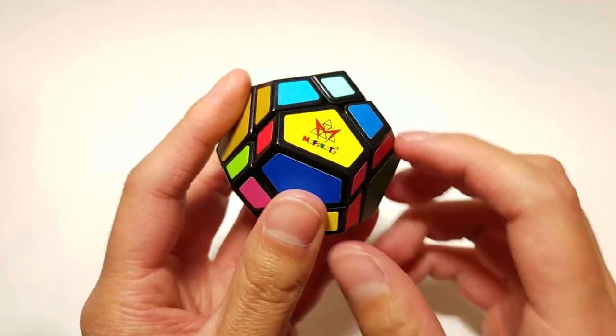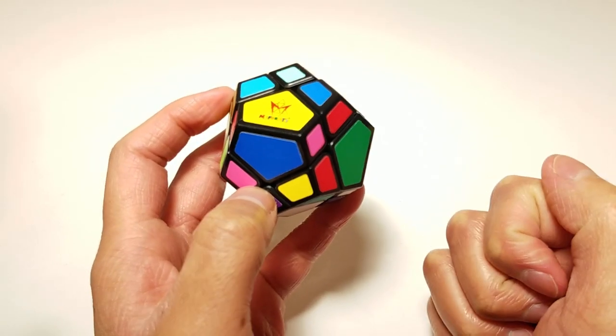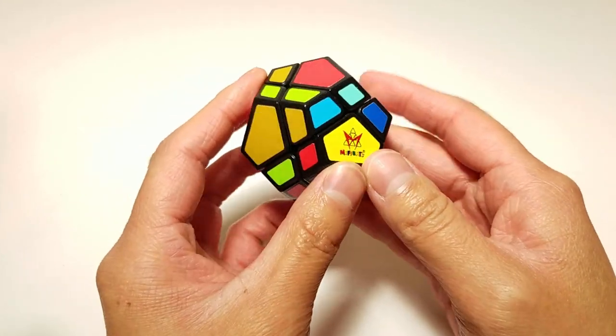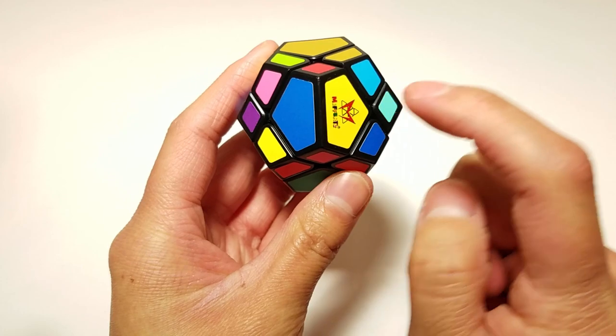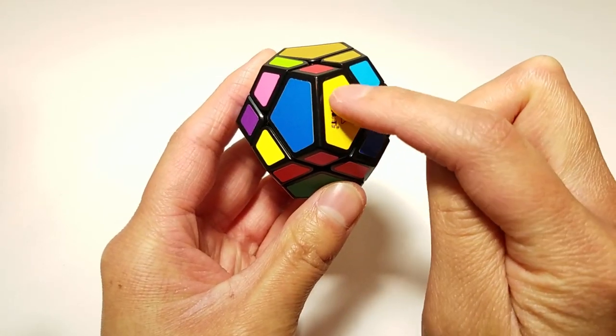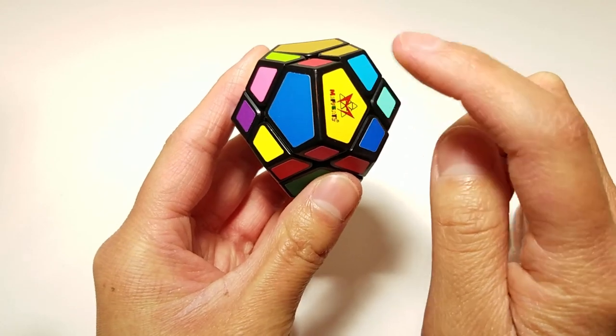For this tutorial, I'm just going to be starting the solve on the Meffert's logo center, just for ease of demonstration. So what I want to do is find the corner pieces that would go around this center. On this side I'd be looking for corner pieces that have yellow, such as this one.